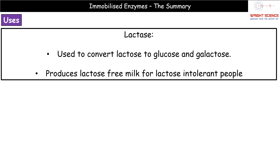The next example is lactase, an enzyme we should be familiar with from module 2 work. Lactase converts lactose into glucose and galactose. The reason we want to do this is to produce lactose-free milk, which is really important for people who are lactose intolerant. By using that lactase enzyme, we can break down the lactose and provide milk that lactose intolerant people can consume without issues.